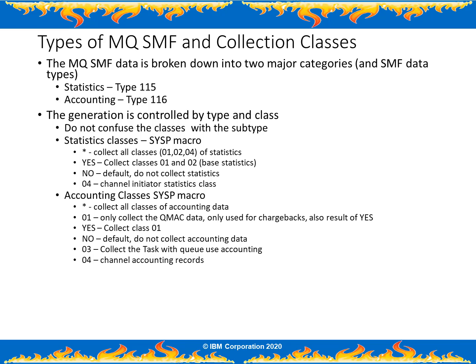The MQ accounting classes start with class one, also known as the QMAC data. Those records were originally designed for chargebacks. The class three data is associated with the tasks, and it includes the queue records, requests, and resources that are task level, like commit requests and latching activity. Finally, the class four accounting data is channel accounting records that include specific information about individual channel utilization.